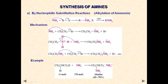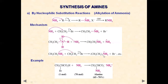Ammonia, containing a lone pair, acts as a nucleophile and attacks the positive carbon center of the alkyl halide, resulting in elimination of the halide ion to give the corresponding alkyl ammonium ion. Excess ammonia then extracts the proton to give the alkyl amine — in this case, ethylamine — and the ammonium ion. In the next step, ethylamine further reacts with ethyl bromide to give diethyl ammonium bromide, and so on.